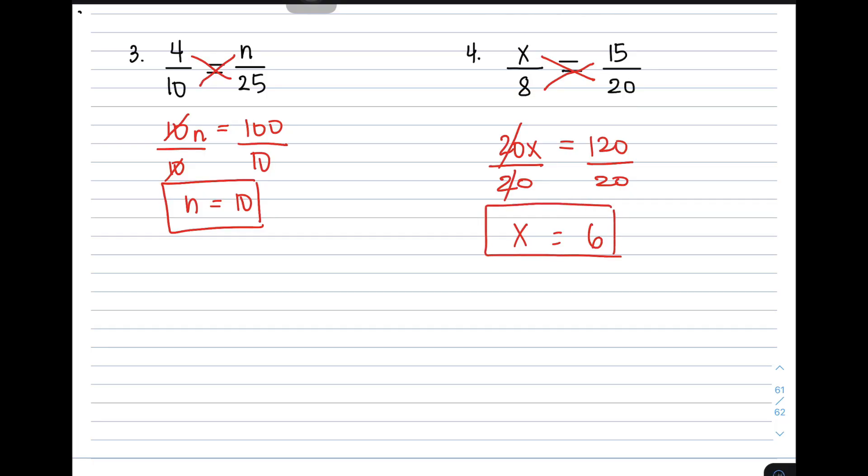Now, I hope from the first 4 examples, you already know how to find the missing variable in a given proportion. So for the last part of this video, I will be asking you to answer an activity to see whether you learned something from this tutorial video.